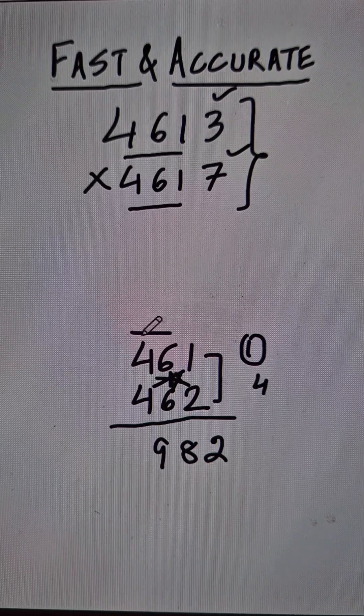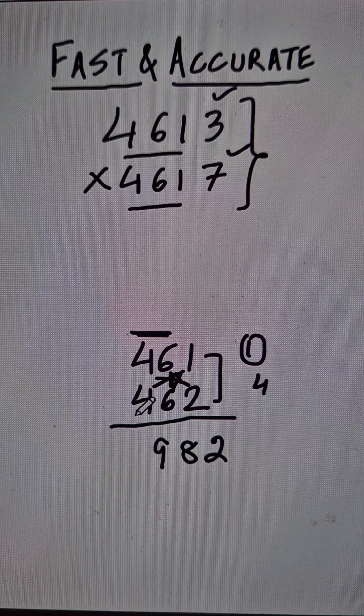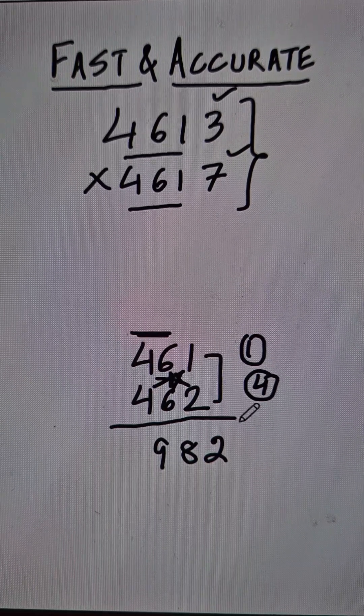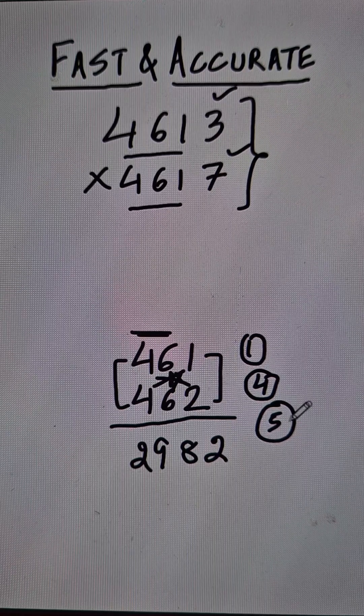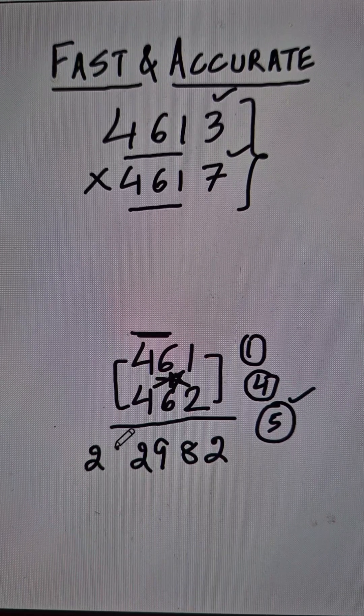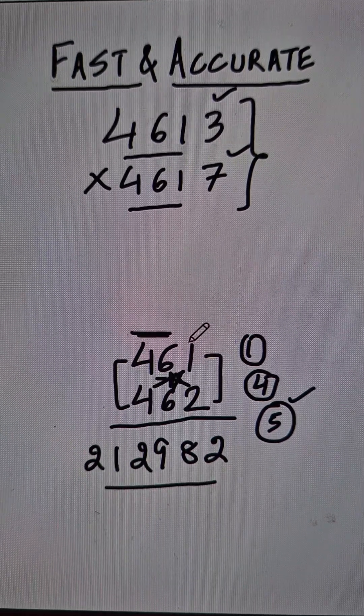Now use the first two pairs. So cross multiply 24 and 24, 48 plus 4 is 52. So we get 2 and then we have a 5 carry. And finally, 4 times 4 is 16 and plus 5 is 21. So we have 212,982.